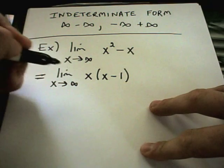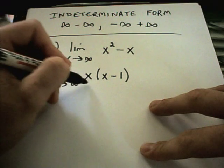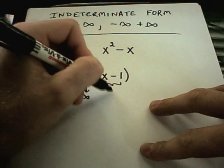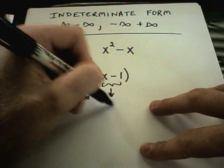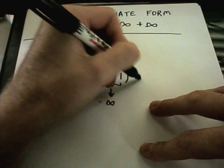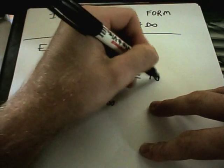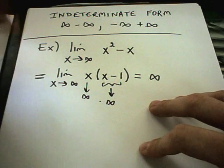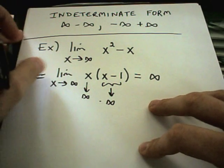Now as x goes to infinity, x is going to infinity and x minus 1 is also going to infinity. You have infinity times infinity, which is infinity. And that's your answer.